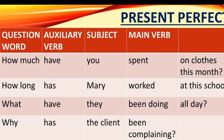Let's look at the present perfect. In the present perfect, the auxiliary verb is 'have' or 'has', and the main verb is the past participle form. For example: How much have you spent on clothes this month? How long has Mary worked at this school? This also works for the present perfect continuous, as in: What have they been doing all day? Why has the client been complaining?